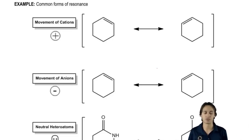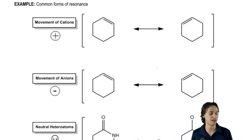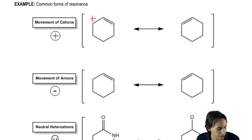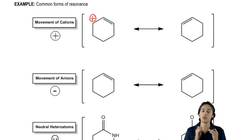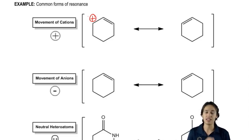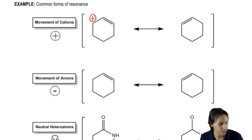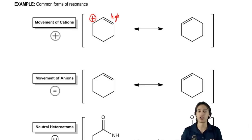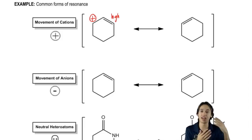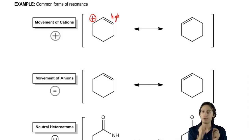Let's talk about cations first. The way this works is that if you have a cation next to a double bond, that gives us the ability to switch the place of those electrons. Because I have an area of high density on one side, which is a double bond. Remember that a double bond not only has a sigma bond, but also a pi bond — pi bonds are extra electrons shared between two atoms. So that's something I can actually move.